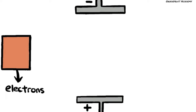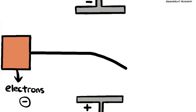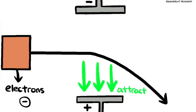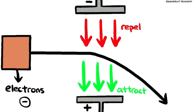For electrons, since they are negatively charged, the beam of electrons will be deflected towards the positively charged plate as they will be attracted by it and repelled away by the negatively charged plate.